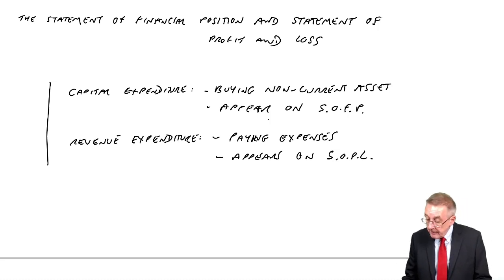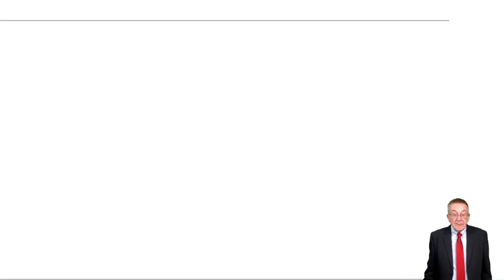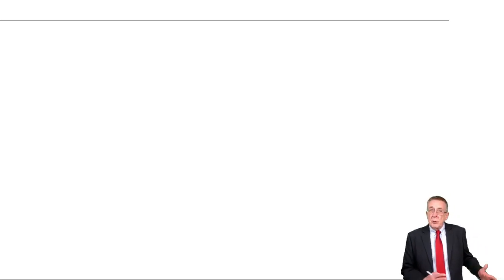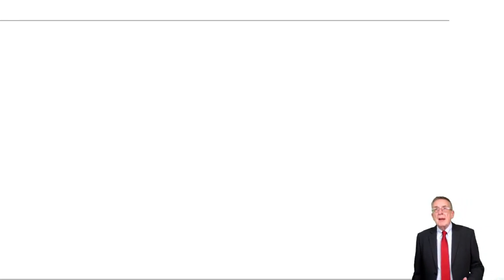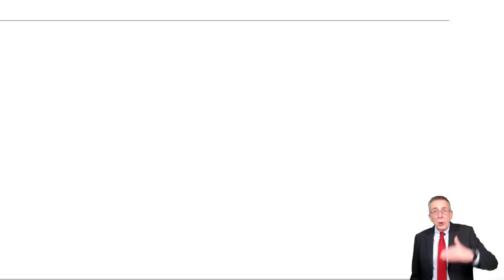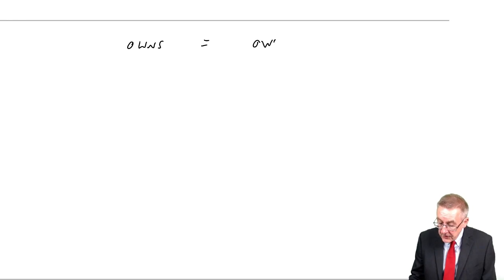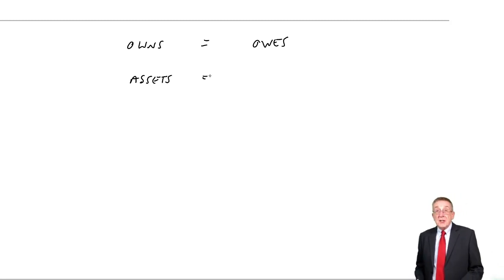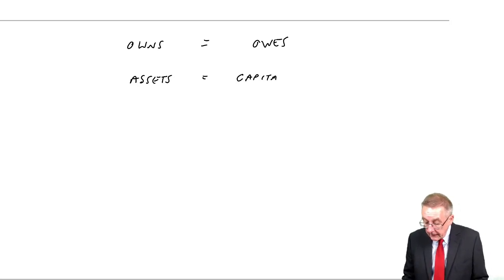The next topic, on the final page, is the accounting equation. Although it's all typed up there, I'm going to write it out because it is so important. Assuming you have watched the earlier chapters, on the Statement of Financial Position we're listing the assets — what's owned by the business — and always, at any point, they're equal to what the business owes: the capital plus the liabilities. So always, what the business owns equals what the business owes. What the business owns are the assets, and what the business owes is the capital owed to the owner, plus the liabilities — the money owed to other people.